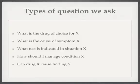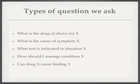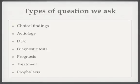It could be about what the best choice of drug is, what might have caused a particular symptom in a patient, whether such and such a test is indicated, or how you manage the symptoms that your patient has presented with, or whether those symptoms could be due to some treatment you've given them. Thinking in broader terms, the questions we ask are about findings, etiologies, differential diagnoses, what tests we do, what kind of prognoses our patients have, what treatments are available, and how good they are.